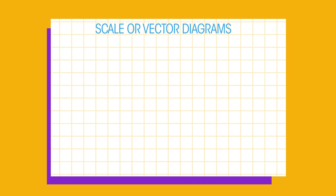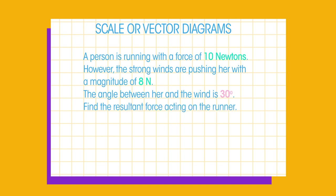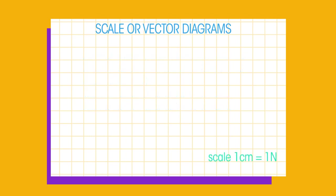Here's an example. A person is running with a force of 10 newtons. However, the strong winds are pushing her with a magnitude of 8 newtons. The angle between her and the wind is 30 degrees. Find the resultant force acting on the runner. Step 1, decide on sensible units. 1 centimetre equals 1 newton.